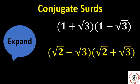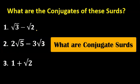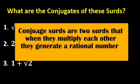Hi, welcome once again to the Mojmat and Science. In this lesson we'll see conjugate surds. We'll use three examples to understand conjugate surds and how to multiply them. Basically, conjugate surds are surds which, when they multiply each other, they generate rational numbers.